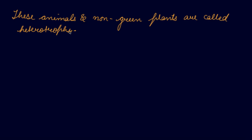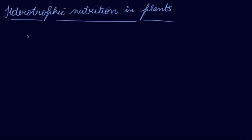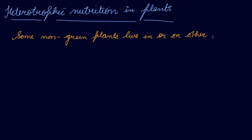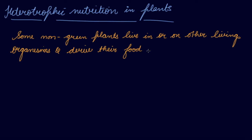Now, if we talk about heterotrophic nutrition in plants — this was heterotrophic nutrition about animals and non-green plants. Now let's discuss heterotrophic nutrition in plants. Some non-green plants live in or on other living organisms and derive their food from them.